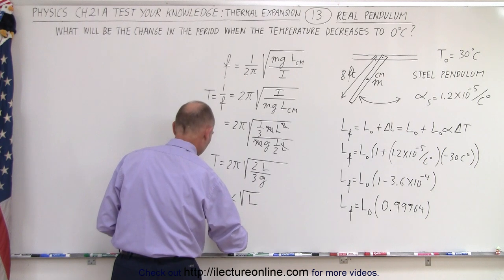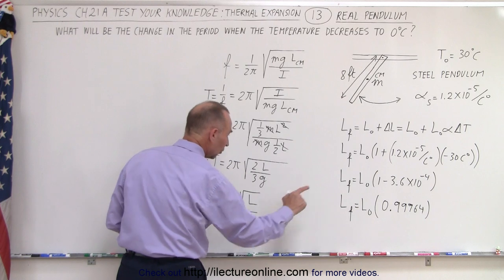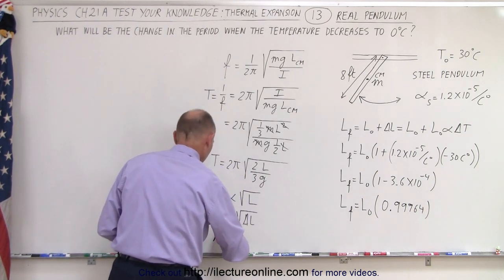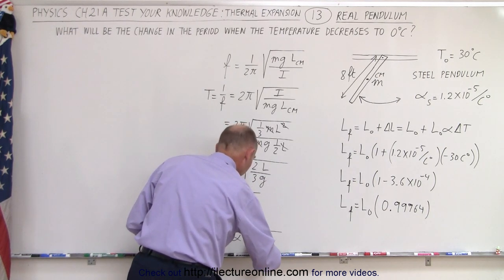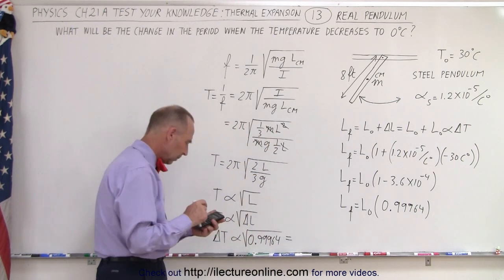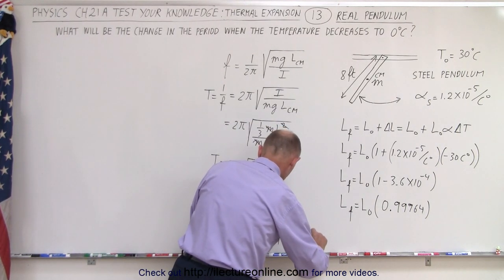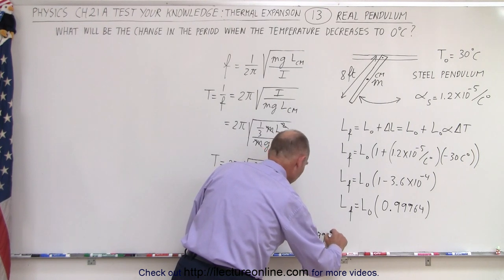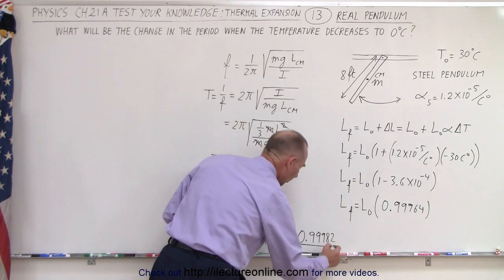Therefore, the change in the period is proportional to the square root of the change in L. Taking the square root of 0.99964, that gives us 0.99982. So the change in the period is proportional to this number — 0.99982 — in this particular pendulum with a temperature change of 30 degrees.